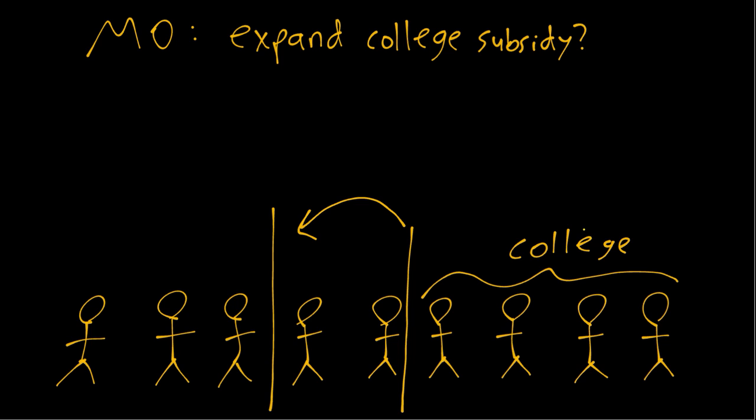So these people at the bottom, even with the bigger subsidy, maybe they still don't go to college. But these in the middle are the ones who are actually affected by this potential policy of expanding the subsidy. So that is the subpopulation that we're interested in. This is our population of interest.